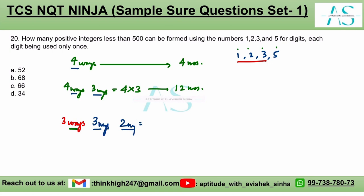For the last case, this is actually 3 into 3 into 2, which is 18 numbers in total.